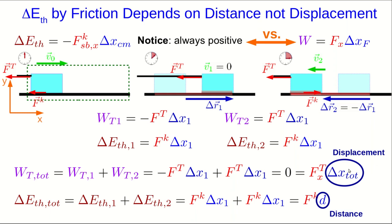So here we have a real contrast that the work by the tension depends on the displacement, but the change in thermal energy depends on the distance. And we can actually rewrite our equation for change in thermal energy due to the friction force to be the magnitude of the friction force times the distance traveled. And now it's perhaps clearer that this will always be positive, since both of these quantities are always positive.